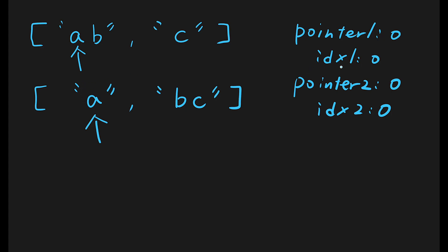When the characters match, we update the index of character — index one and index two — to next, so both become one. But look at this input array: we've reached the end of that word. In that case, we want to move to the next word and the first character. So we update pointer two by one and set index two back to zero, so we can point to the first character in the next situation.